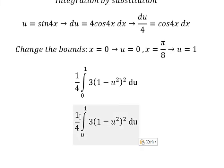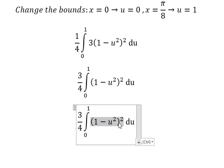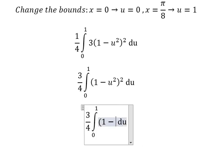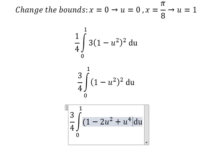So I will put number 3 over 4 outside. This one we have 1 minus 2u square plus u to the power of 4.